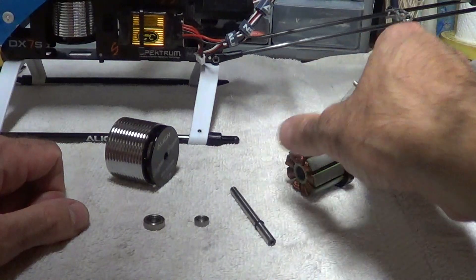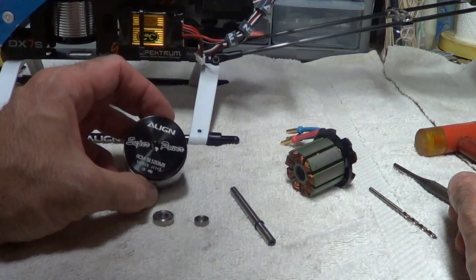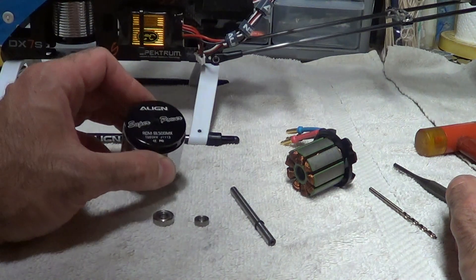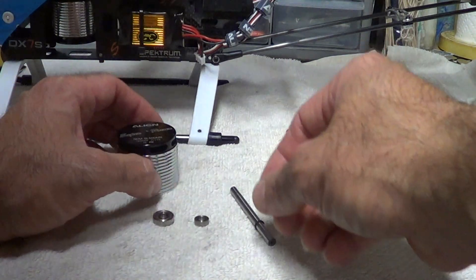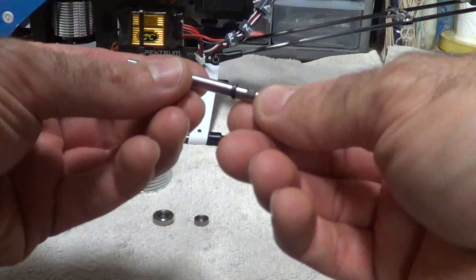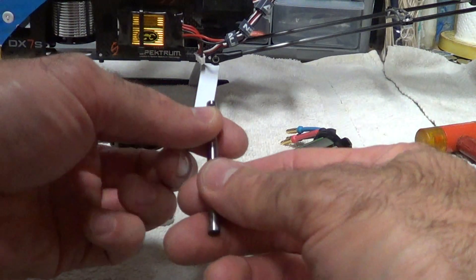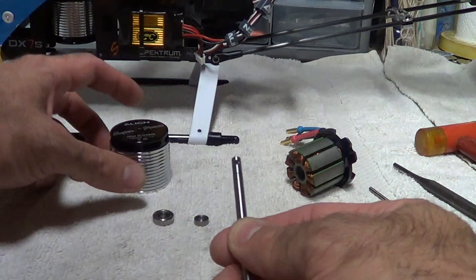So there's my tips on how to change bearings for an Align motor and how to take an Align motor apart. Now when you're putting it back together, there is a flat spot up there. You want to get that lined up.